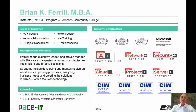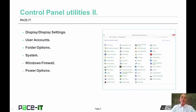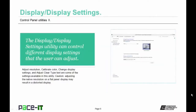Hello, I'm Brian Farrell, and welcome to PACE IT's session on Control Panel Utilities, Part 2. Today we're going to discuss some control panel utilities available in all versions of Windows. We begin with the Display Settings applet, which can control different display settings — you can adjust resolution, calibrate color, change display settings, and adjust ClearType text. Use caution with flat panel displays as they have a native resolution; changing it may result in a distorted image.